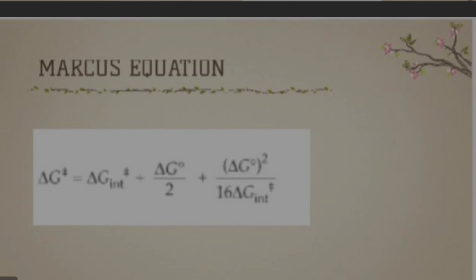The Marcus equation is: ΔG‡ = ΔG_int + ΔG°/2 + (ΔG°)² / 16·ΔG_int, where ΔG_int is the intrinsic barrier.